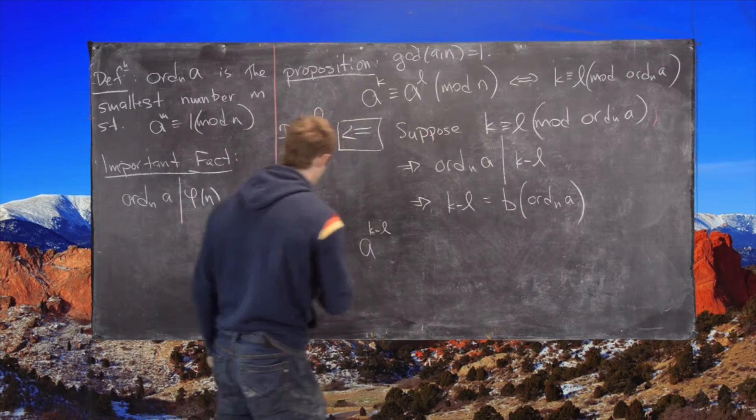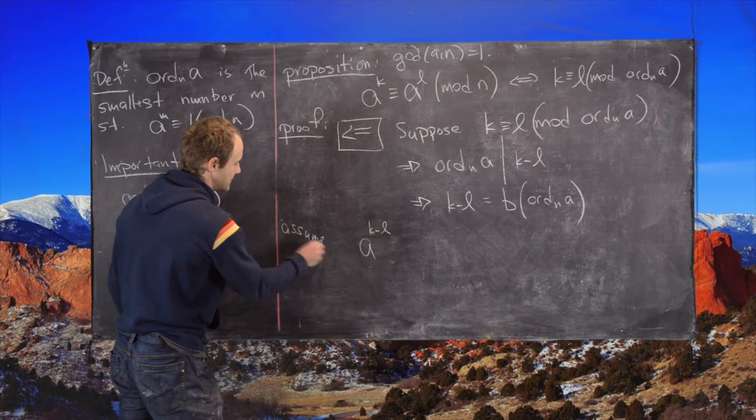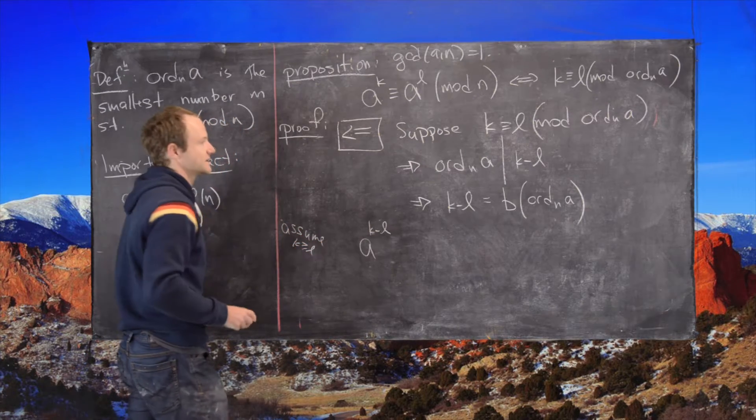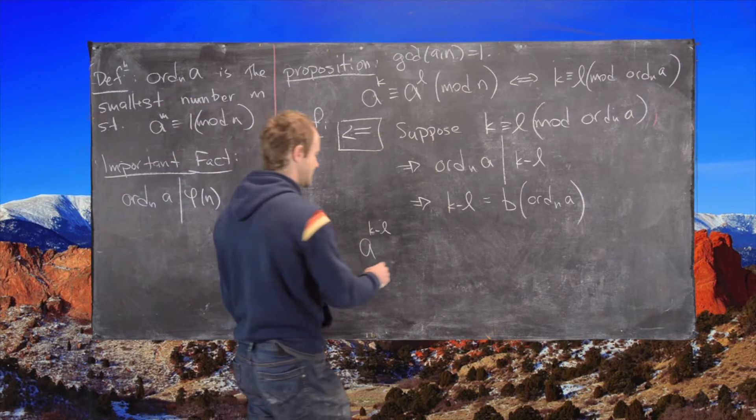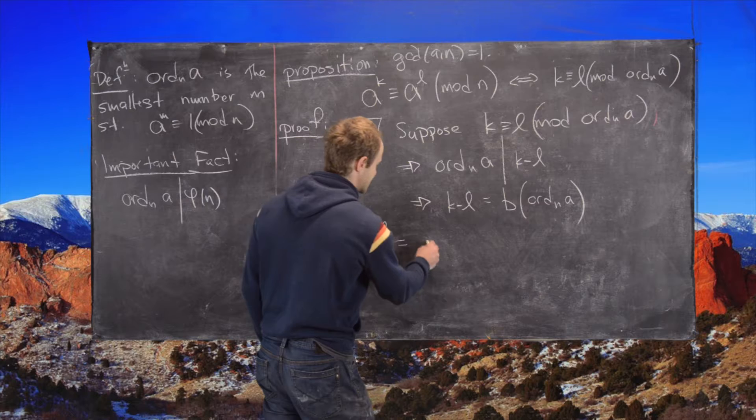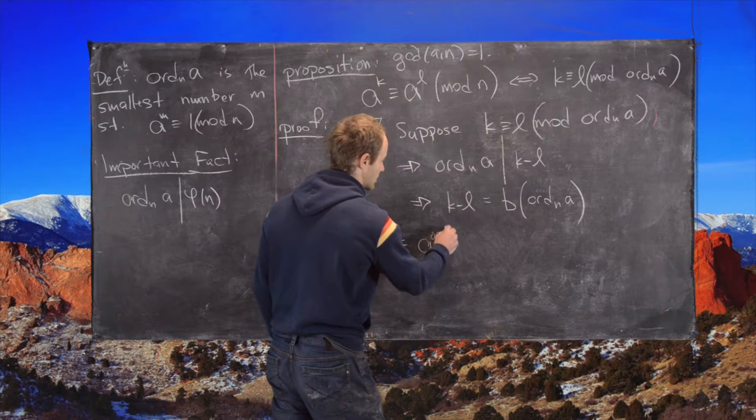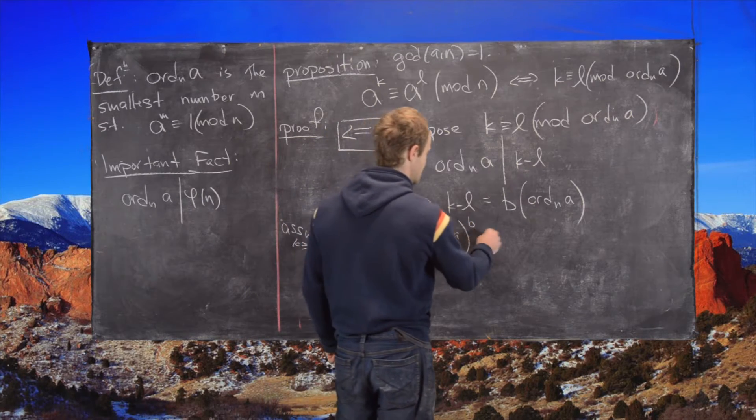So I guess here we'll assume, just as we did before, that k is bigger than or equal to l. And we raise a to the k minus l. So that's the same thing as a to the order modulo n of a all to the b.